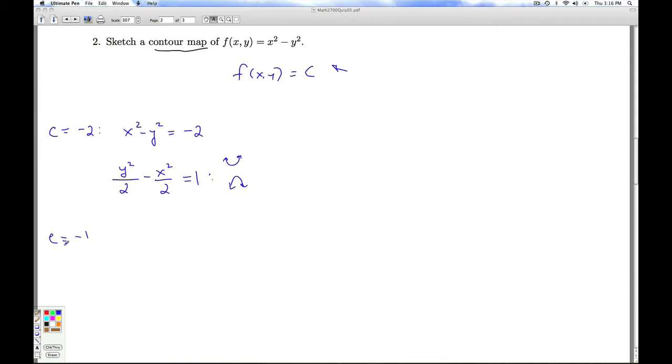Let's move on to c equal negative 1. I would get x squared minus y squared equals negative 1. Divide by negative 1 and rearrange things. I'm going to get y squared minus x squared is 1. And once again, that's another one of these hyperbolas.